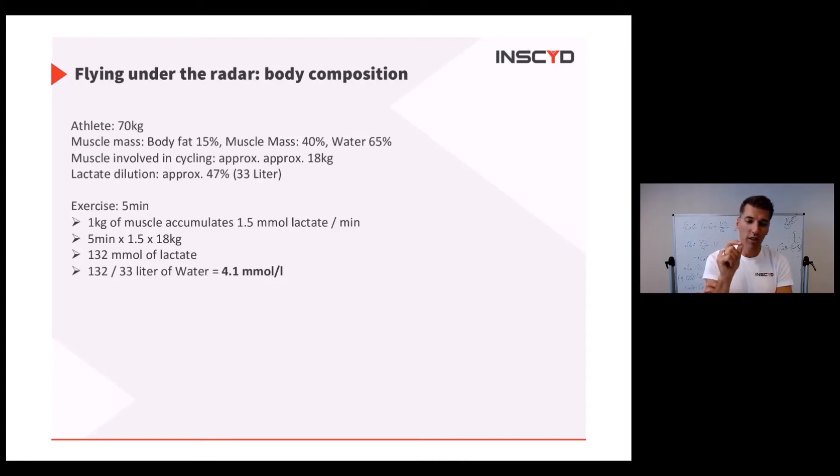This is actually how the lactate concentration that you measure with your device at the earlobe is composed. There's more than 100 millimoles of lactate produced in the muscle, but then it dilutes in the body. This is why you can measure it at the earlobe, and then the concentration is lower. This is how you get your normal lactate measurement of 4.1 millimoles.